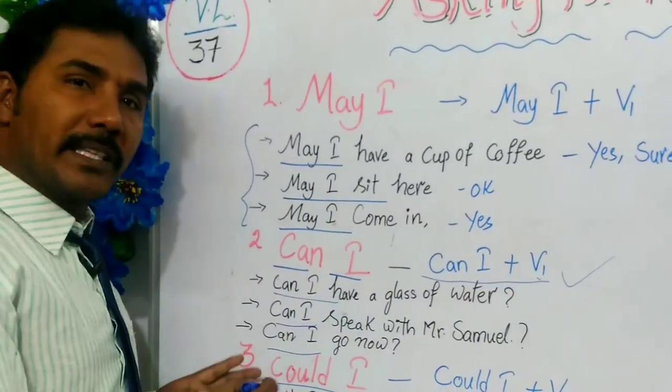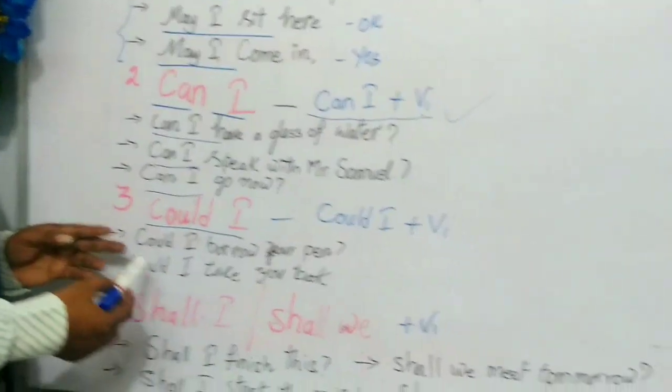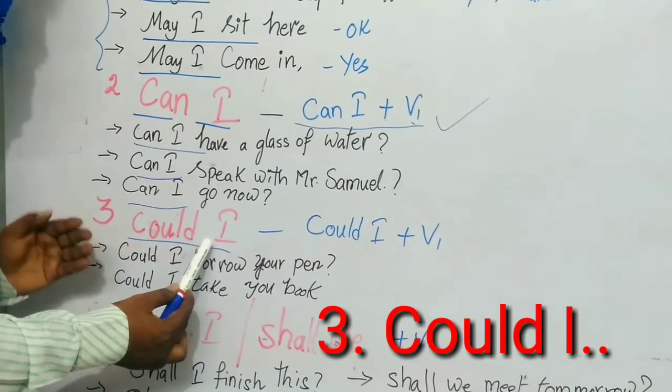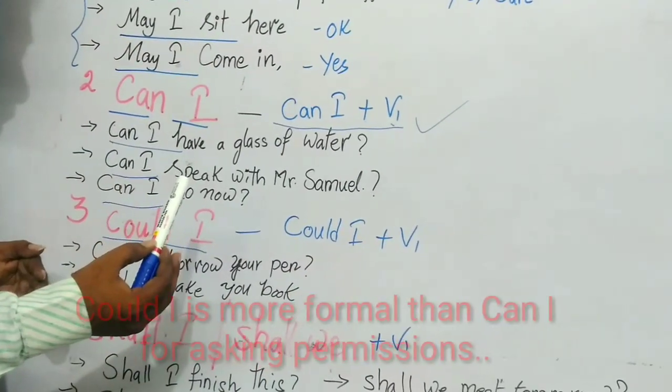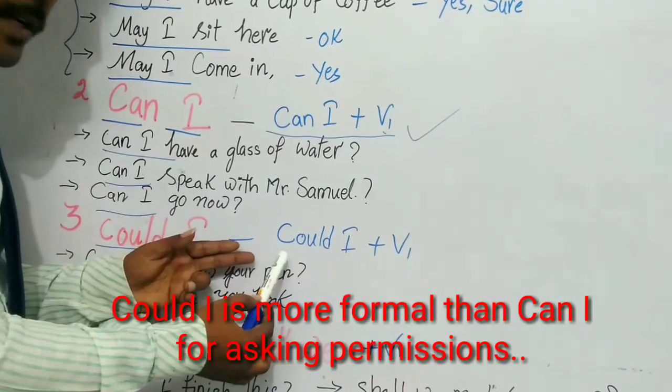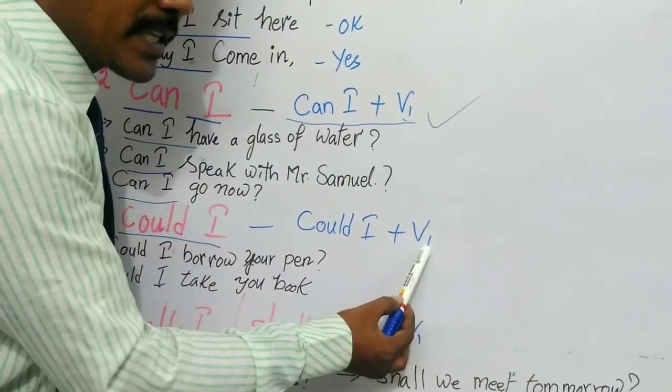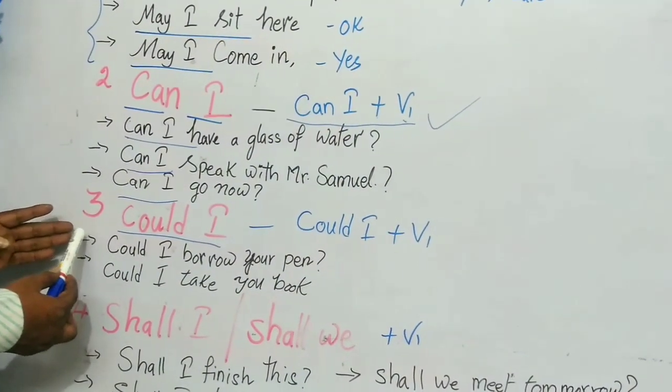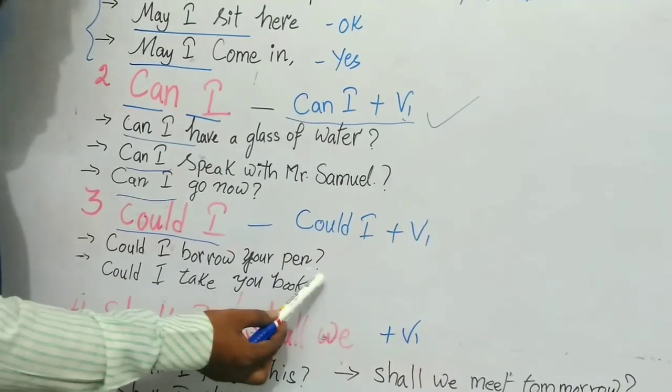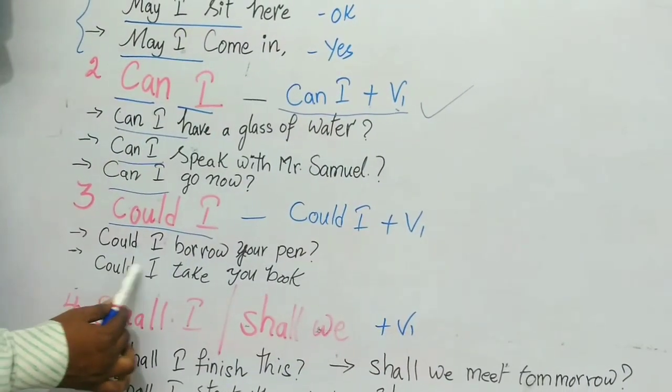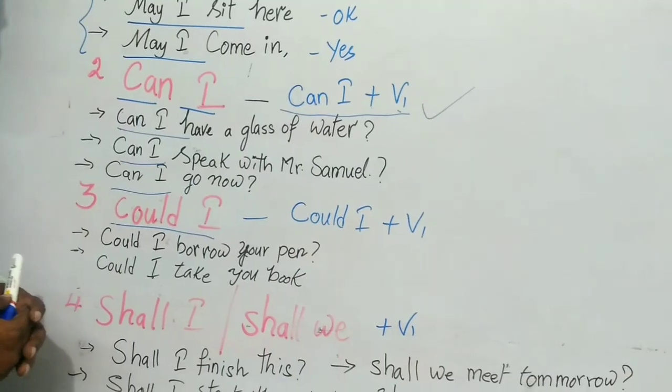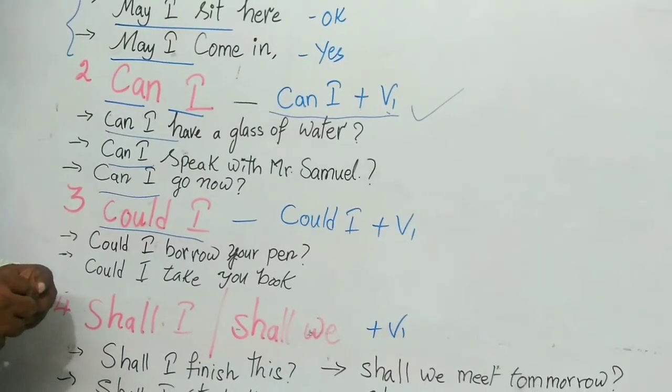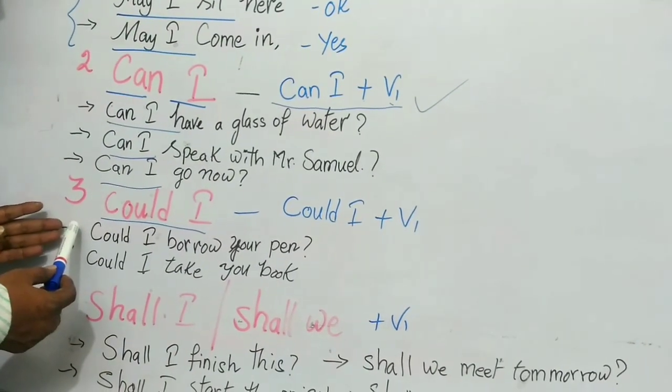Let's go on to the third method to ask for permission - that is called Could I. Could I also uses the first form. How do we ask with Could I? Examples: Could I borrow your pen? Could I take your book? Could I join with you?